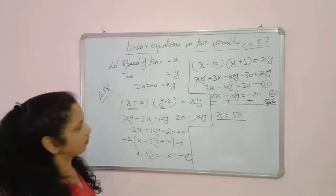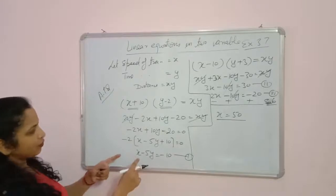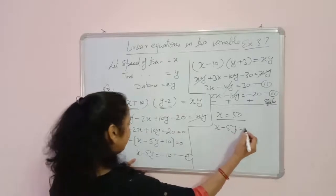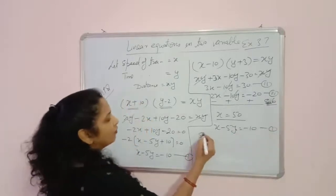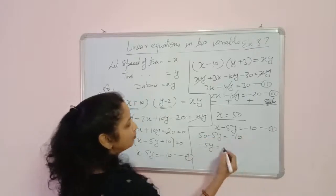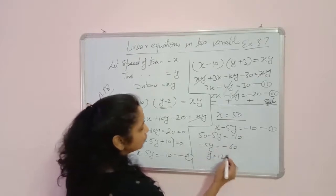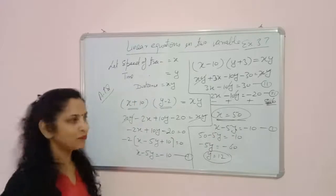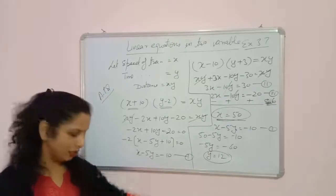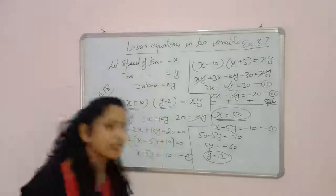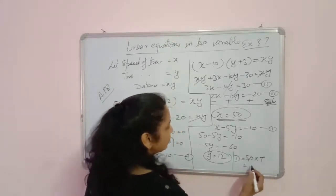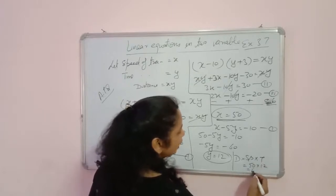Putting x equals 50 into equation 1: 50 minus 5y equals minus 10, so minus 5y equals minus 60, giving y equals 12. The time taken is 12 hours. Finally, distance equals speed multiplied by time: 50 multiplied by 12 equals 600 km.